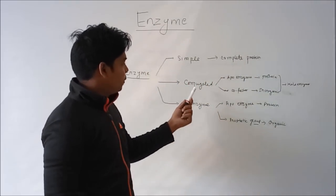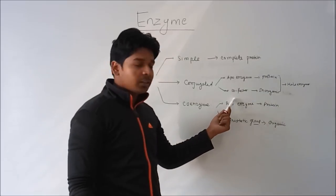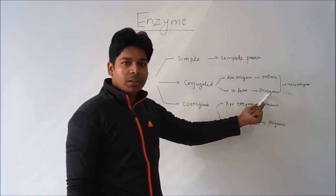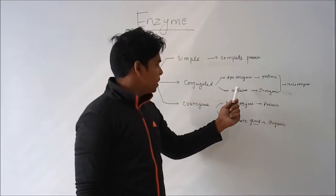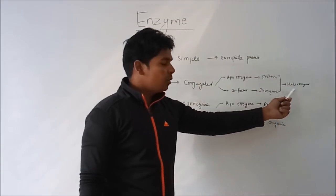Conjugated enzyme is of two parts: apoenzyme and cofactor. Cofactor is basically made of two elements. Apoenzyme is made of protein. The apoenzyme and cofactor makes holoenzyme.